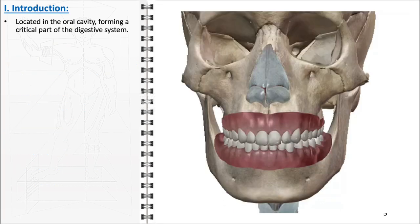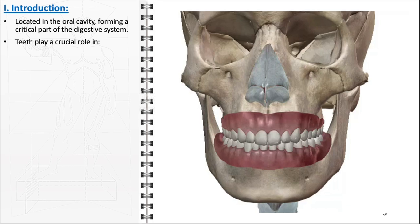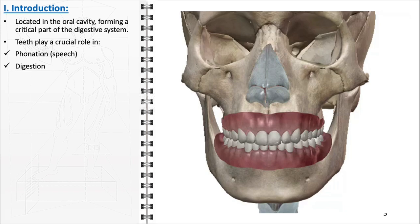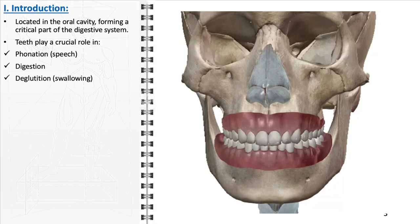Situated in the oral cavity, teeth are an integral part of the digestive system and play several crucial roles. They are essential for phonation, which is the production of speech sounds, and for the initial stage of digestion, where they break down food. Teeth also facilitate deglutition, or swallowing, and contribute significantly to facial aesthetics.